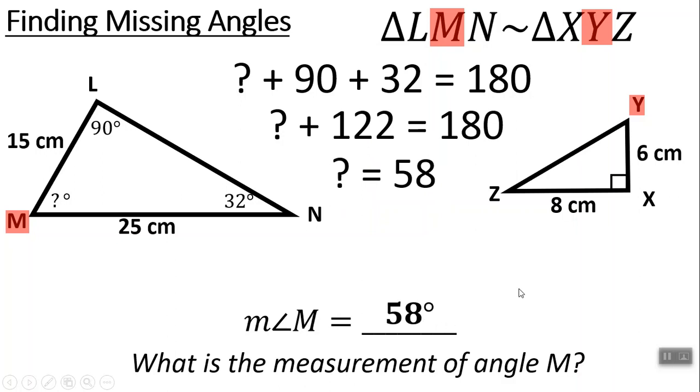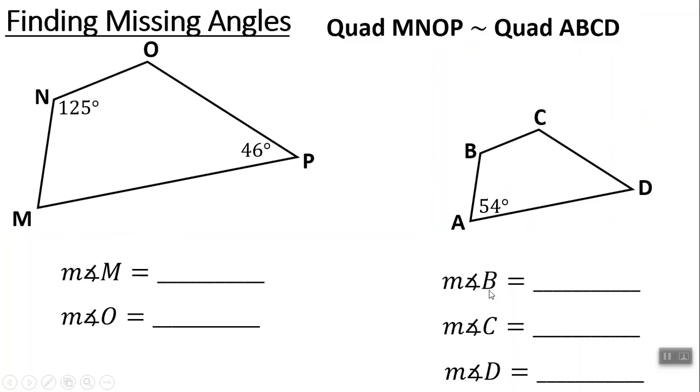Moving on. We have a quadrilateral. And it says quadrilateral MNOP is similar to quadrilateral ABCD. First, they want to ask about angle M. Well, they don't give us angle M here. But we see up here that M corresponds with A. And they do give us A over here. So M is also 54 degrees.